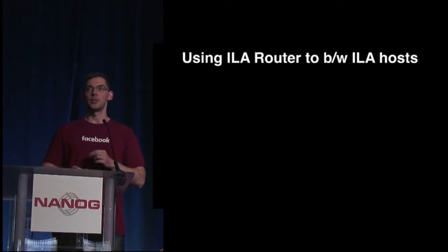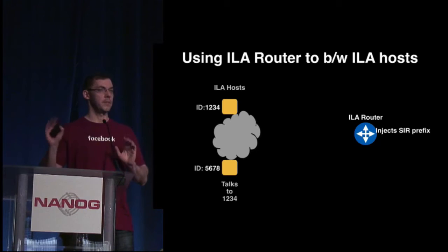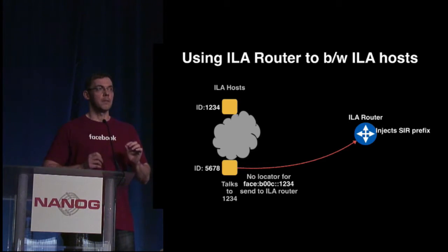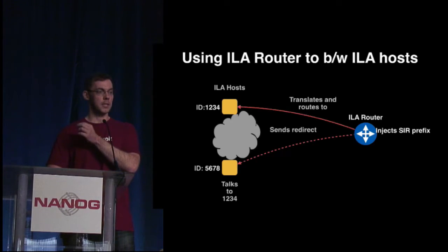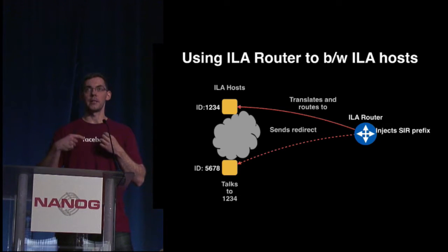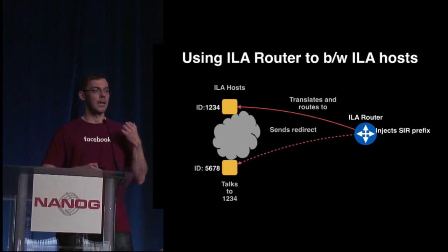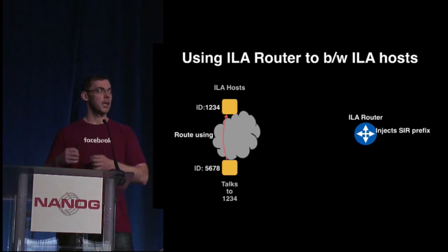Now let's see how the ILA router provides transit between ILA hosts. Imagine the ILA host has an empty mapping cache. It sends a packet with no translation; the packet gets sucked into the ILA router because of the SERP prefix injection. The router does the translation and sends the packet directly, similar to an ICMPv6 redirect — it tells the originator the new mapping so the ILA host can shortcut and bypass the ILA router for further interactions. ILA hosts may respond to these redirect messages and install mappings on demand.